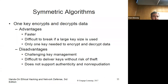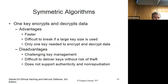Key distribution is also an issue. I could easily give Quinn a key because he's right here, but if I had to get someone a key where Wesley is moving to Russia, that would be more difficult. It's difficult to deliver keys without risk of theft. Symmetric also does not support authenticity or non-repudiation.